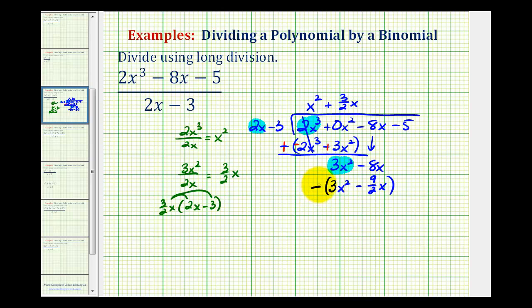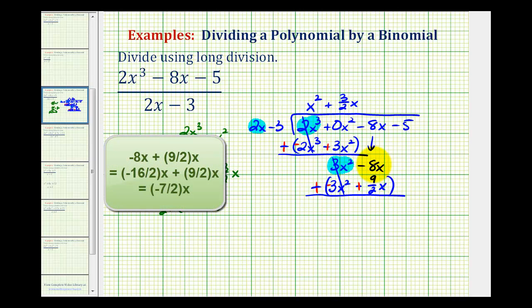We need to subtract this, but instead we're going to add the opposite. This will be plus, this will be negative, and this will be plus. This would be 0. And then for negative 8x plus 9 halves x, well negative 8x would be negative 16 halves x. So here we'll have negative 7 halves x.